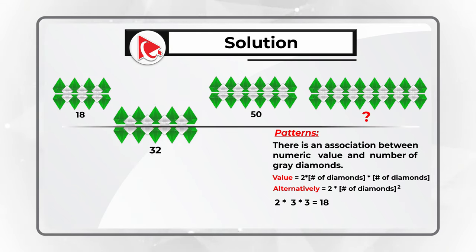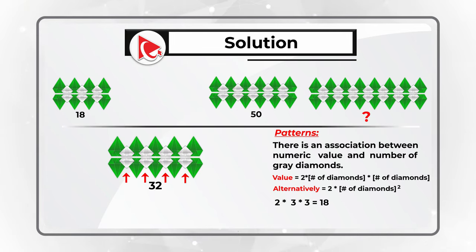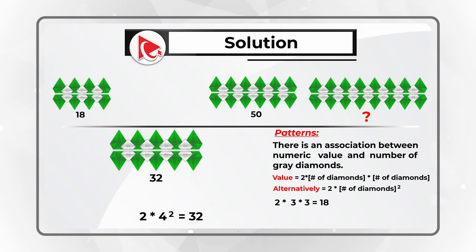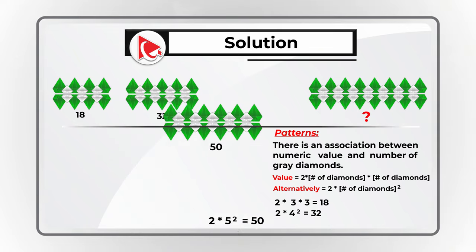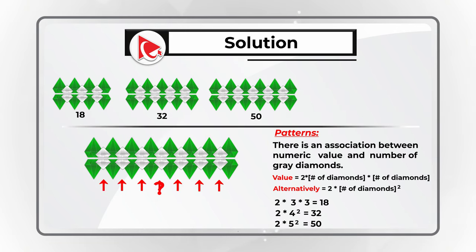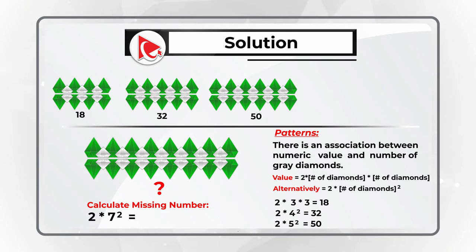The next diamond group has four diamonds: 2 multiplied by 4 squared equals 2 multiplied by 16, which equals 32. The next one has five diamonds: 2 multiplied by 5 squared equals 50. The missing number has a group with seven gray diamonds. To calculate it: 2 multiplied by 7 squared equals 2 multiplied by 49, which equals 98. So the correct choice is choice C: 98.